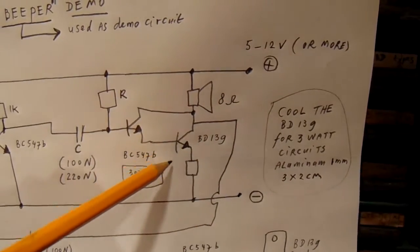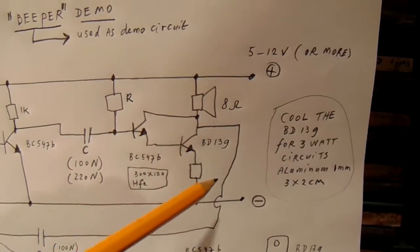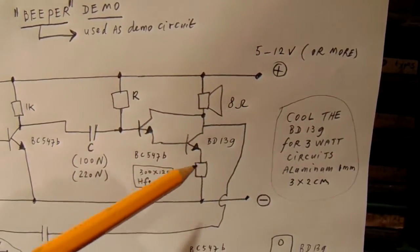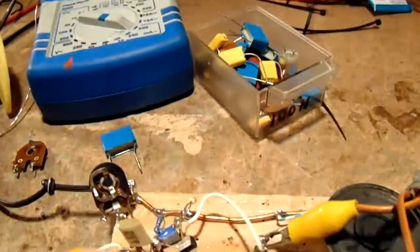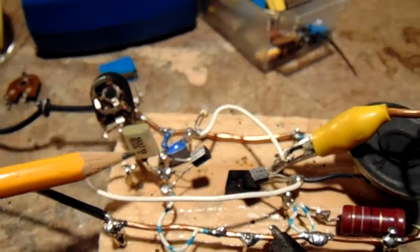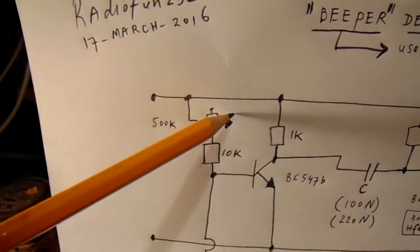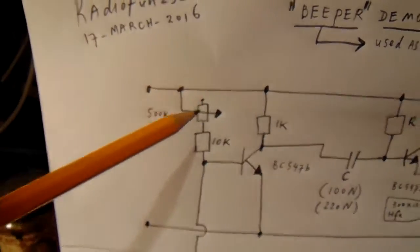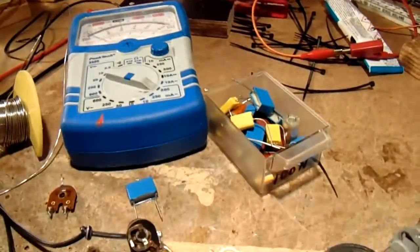You can vary somewhat with that resistor to get more volume out of the circuit. You can vary with the caps to get another frequency. You can vary with this potentiometer to get different frequencies, etc.